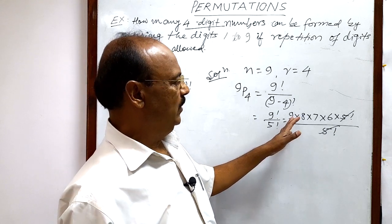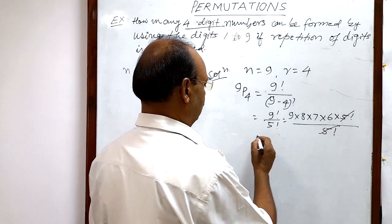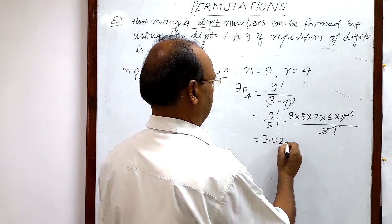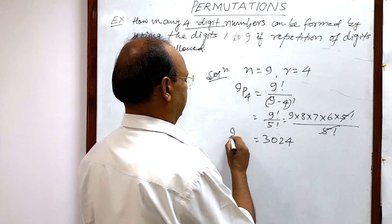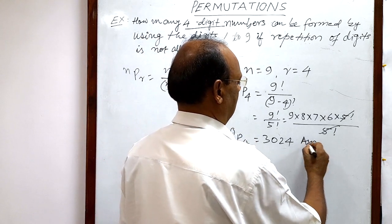And now we have to multiply these four numbers: 9, 8, 7, and 6. That will be equal to 3024. So value of 9P4 is equal to 3024, and this is the answer.